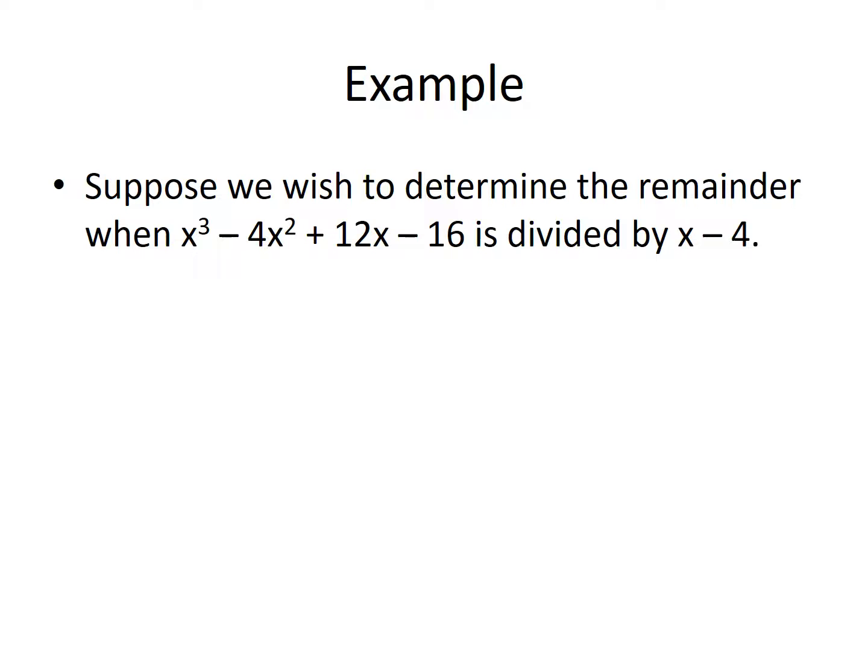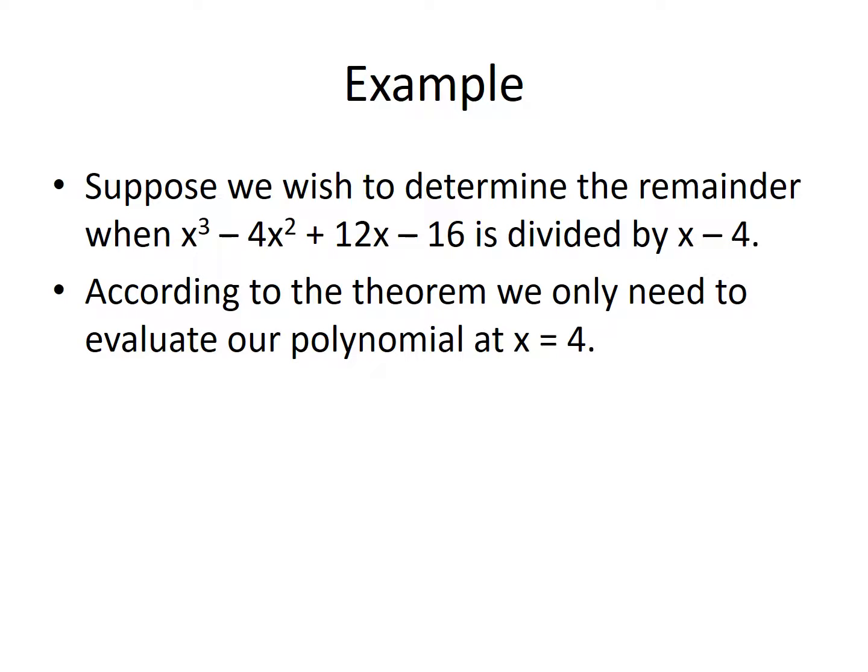Here's an example. Suppose we wish to determine the remainder when x cubed minus 4x squared plus 12x minus 16 is divided by x minus 4. According to the theorem, we only need to evaluate our polynomial at x equal 4. So we plug 4 into the polynomial: 4 to the third minus 4 times 4 squared plus 12 times 4 minus 16. After that arithmetic is done, you get 32.